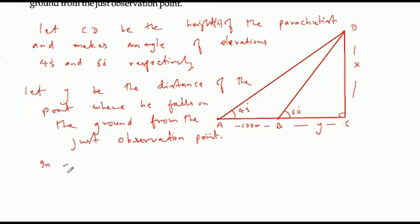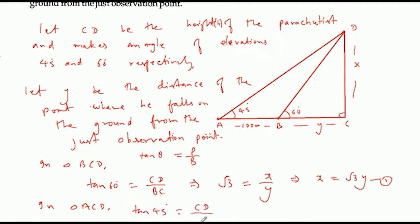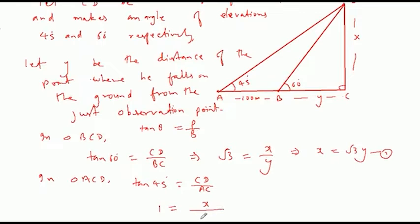In triangle BCD: tan(theta) = perpendicular / base, so tan(60°) = CD / y, giving root 3 = CD / y, therefore x = root 3 · y. This is equation 1. In triangle ACD: tan(45°) = CD / AC, so tan(45°) = x / (y + 100), giving y + 100 = x. This is equation 2.